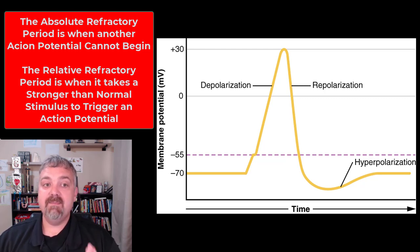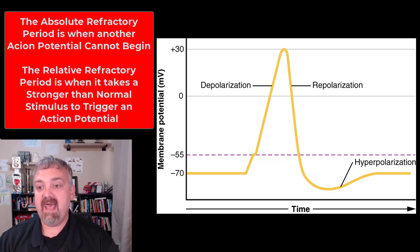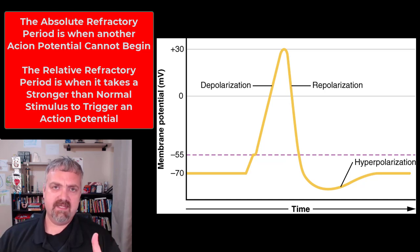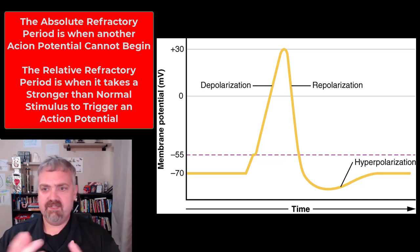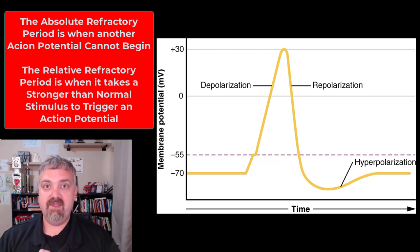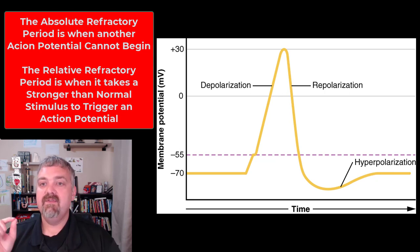At the absolute refractory period, another action potential could not be started no matter what, no matter how much stimulus you were to add. Think about it like you can't fire a gun while it's already firing. The sodium channels literally would not work right now, so there's no way that you can get an action potential. That's called the absolute refractory period.